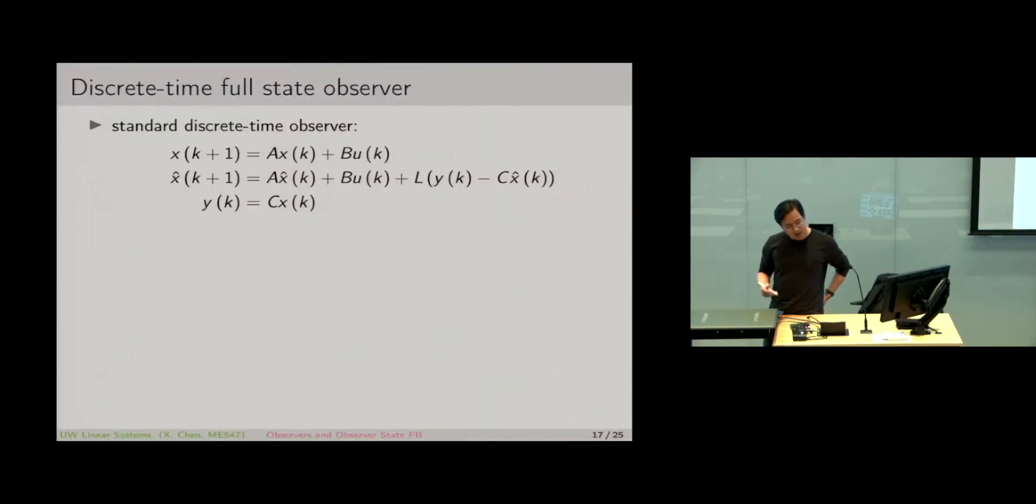Let's start with the discrete time Luenberger observer, which is very similar to the continuous time case. We have a copy of the state dynamics plus L times the difference between the actual output Y minus estimated output Y hat, which equals C times X hat. And the output equation is Y equals CX. This is the state equation. This is the observer state equation.